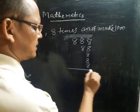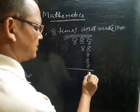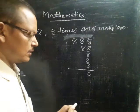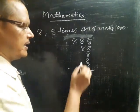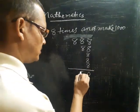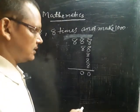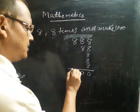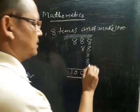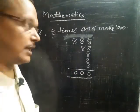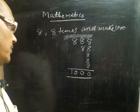What will you get? Five eights equal forty, carry four. Eight and eight is sixteen, plus four equals twenty, carry two. Eight plus two gives us one thousand. So in this way, you are able to take eight, eight times, and make one thousand.